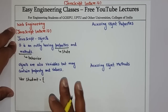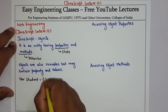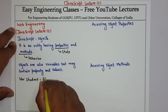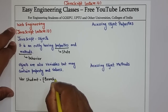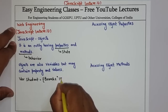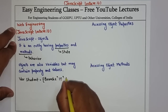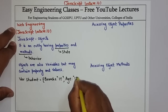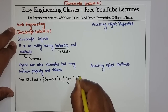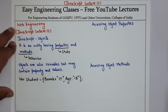Objects may contain properties and values. For example, if I define a variable 'student', then that becomes an object. Suppose I have added a property 'branch' with a value, and then a property 'age' with value 18 — so this is an object created with the name student.